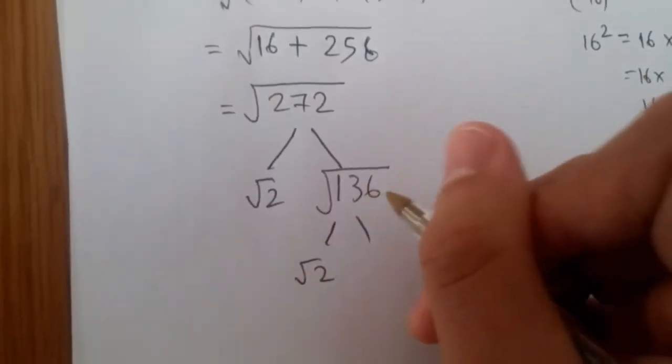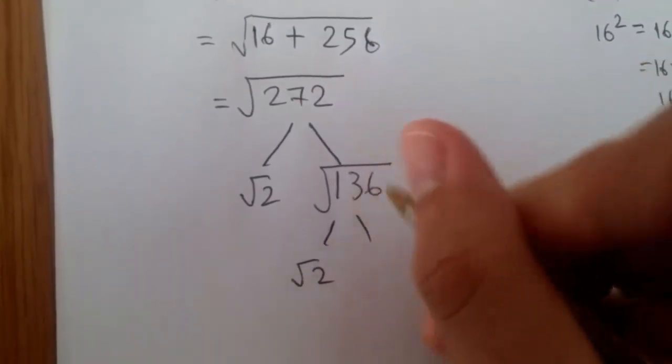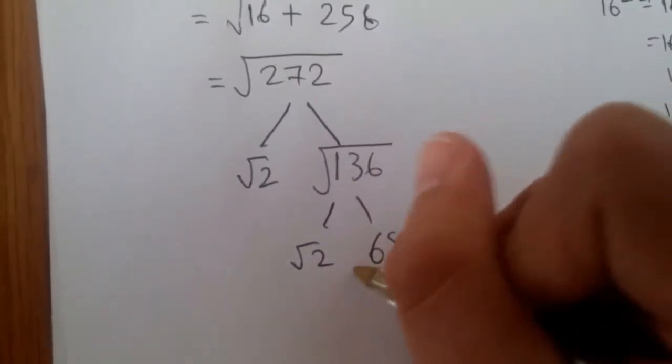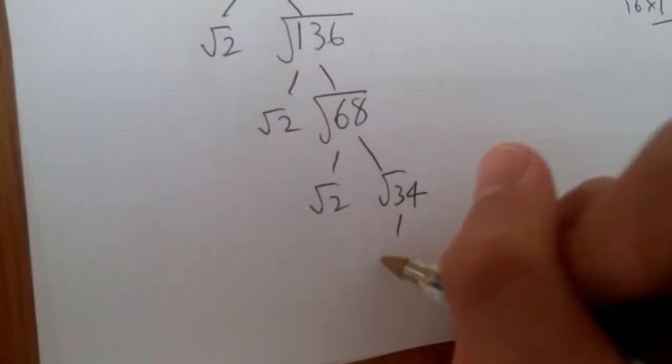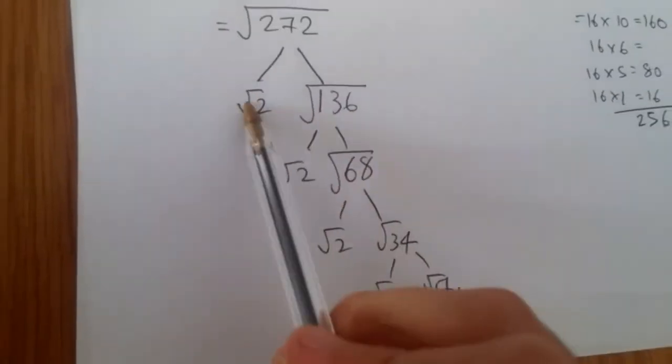Again, root 2, half of 36 is 18, plus 5, plus half of 100, 8, so it should be 68. Now it gets easier. So this is root 2, root 34, half of 34, 17.